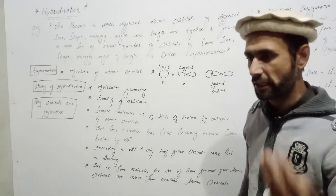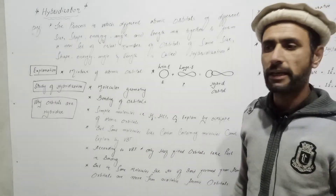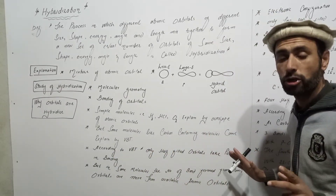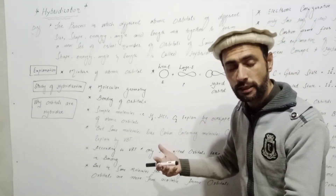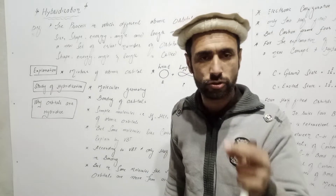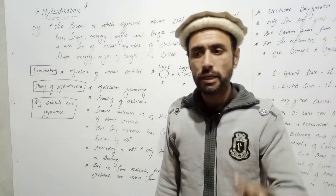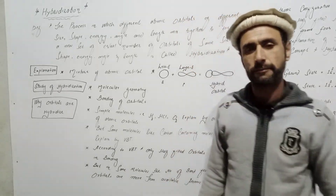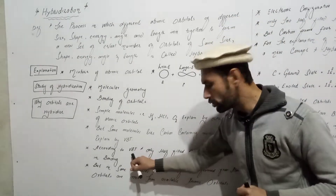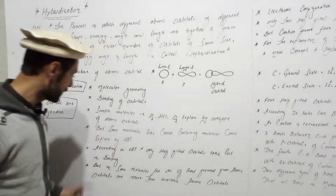The explanation involves carbon and the Valence Bond Theory, VBT. According to VBT, only half-filled orbitals take part in bond formation in molecules.